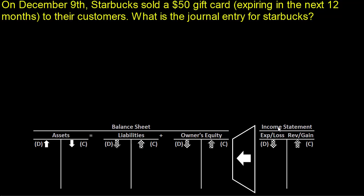This is a journal entry showing what we do when we collect money in advance of providing a good or service. Somebody's paid us, but we haven't given them anything, and we might not do it for a while. On December 9th, Starbucks sold a $50 gift card expiring in the next 12 months to their customers.